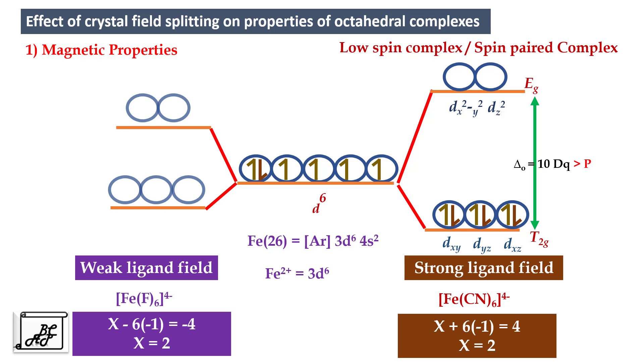In case of weak ligand field the 3d orbitals again split into T2g and Eg orbitals but the gap between the T2g and Eg is less than pairing energy. Due to this, the first three electrons get occupied into T2g orbital but the fourth electron goes into the Eg orbital. All the 3d orbitals are singly occupied and pairing takes place from T2g orbital. The sixth electron gets occupied into the lower lying T2g orbital. In this way we get high spin complex or spin free complex.